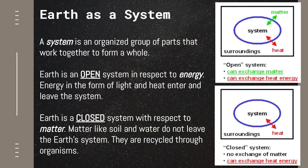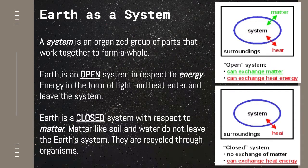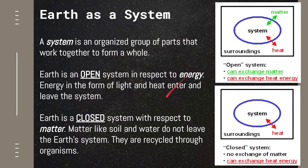Earth as a system can be categorized into two. First, with respect to energy, we can consider Earth as an open system. It means that we are still receiving energy from outside our planet. Energy in the form of light and heat enters and leaves the system. In terms of energy, we are still receiving energy coming from the sun, and we are also giving off heat and energy as they leave our planet. So in terms of energy, the Earth is considered an open system — we receive energy and we give off energy. There is an exchange of heat energy in that respect.